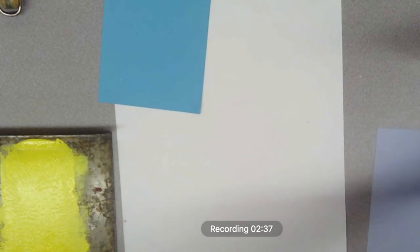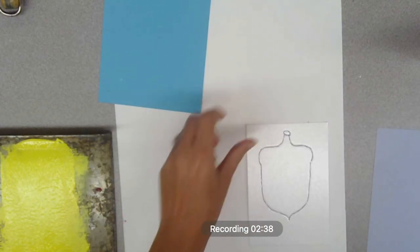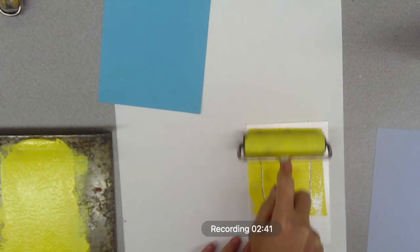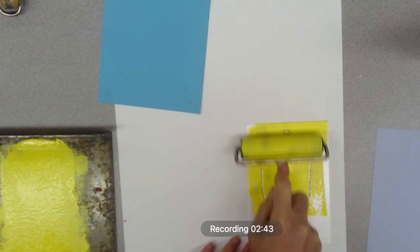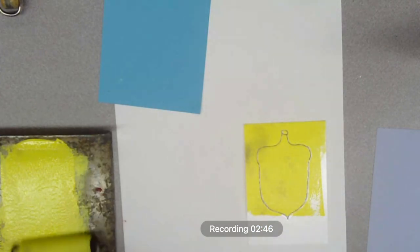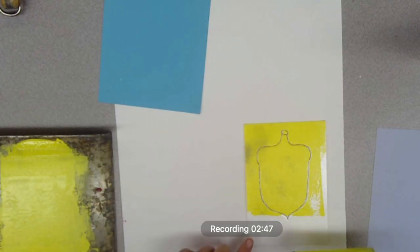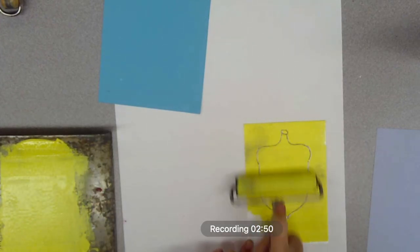Once you hear that crackle it's good to go. You're going to roll ink onto your styrofoam plate and make sure it's completely covered. You might have to do two coats, and from there we'll make a print.